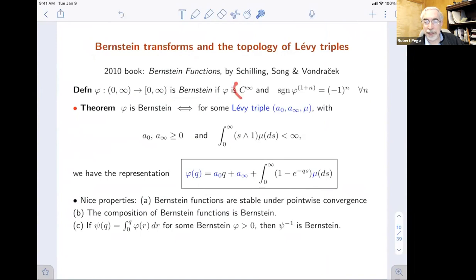There's these things called Bernstein transforms. There's this book that appeared about 10 years ago by Rene Schilling, Song, and Vondracek. What's a Bernstein function? A Bernstein function is a C-infinity function, it's non-negative, and the derivatives after the first one alternate in sign. The representation, their first representation theorem says such a function has a representation that looks like this. There's non-negative coefficients a0 and a-infinity, and a measure mu whose only condition is that this integral converges.